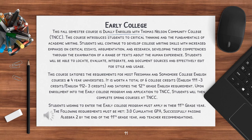Upon enrollment into the Early College Program and an application to Thomas Nelson Community College, students will then complete spring courses at Thomas Nelson Community College. Students wishing to enter the Early College Program must apply in their 11th grade year. Requirements include a 3.0 cumulative GPA, successfully passing Algebra 2 by the end of the 11th grade year, and teacher recommendations.